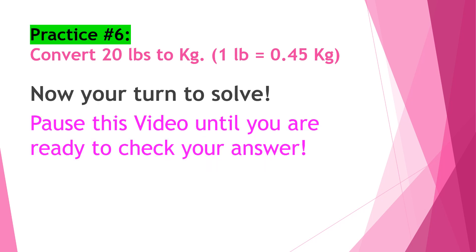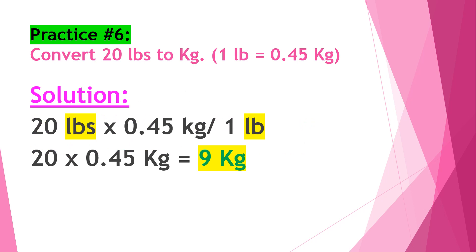Practice number six: Convert 20 pounds to kilograms. Our conversion unit is 1 pound equals 0.45 kilograms. Now it's your turn to solve — pause this video until you are ready to check your answer. The answer is 9 kilograms. 20 pounds times 0.45 kilograms will give you 9 kilograms.